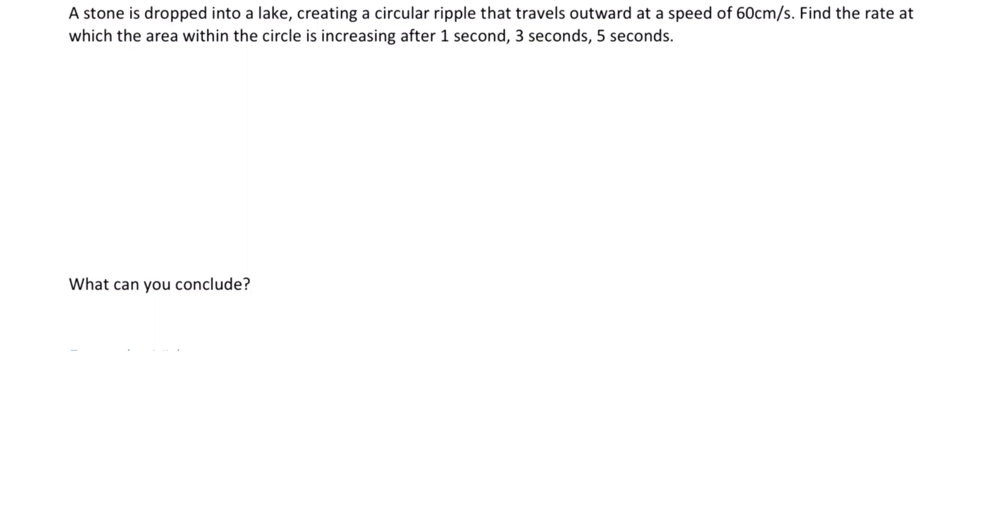A stone is dropped into a lake, creating a circular ripple that travels outward at a speed of 60 centimeters per second. Find the rate at which the area within the circle is increasing after 1, 3, and 5 seconds.